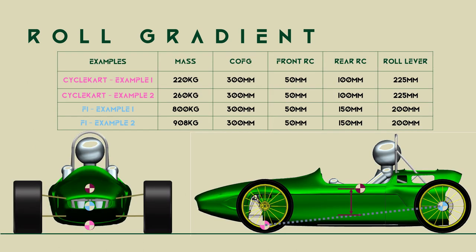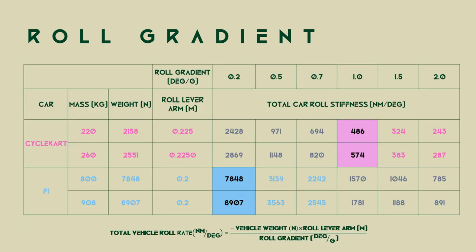We can transform the roll gradient into wheel rates and spring rates by using total vehicle weight and the average roll lever arm length. We calculate total vehicle roll stiffness as: (total vehicle weight in Newtons × lever arm) / roll gradient. See the table for results. In terms of roll stiffness ranges, the F1 car has high stiffness requirements and the cycle cart has lower stiffness requirements.